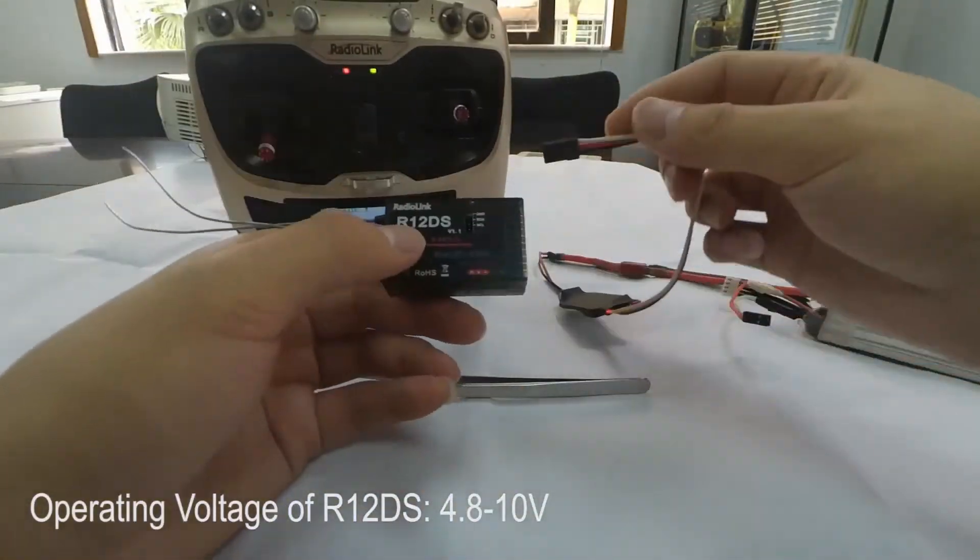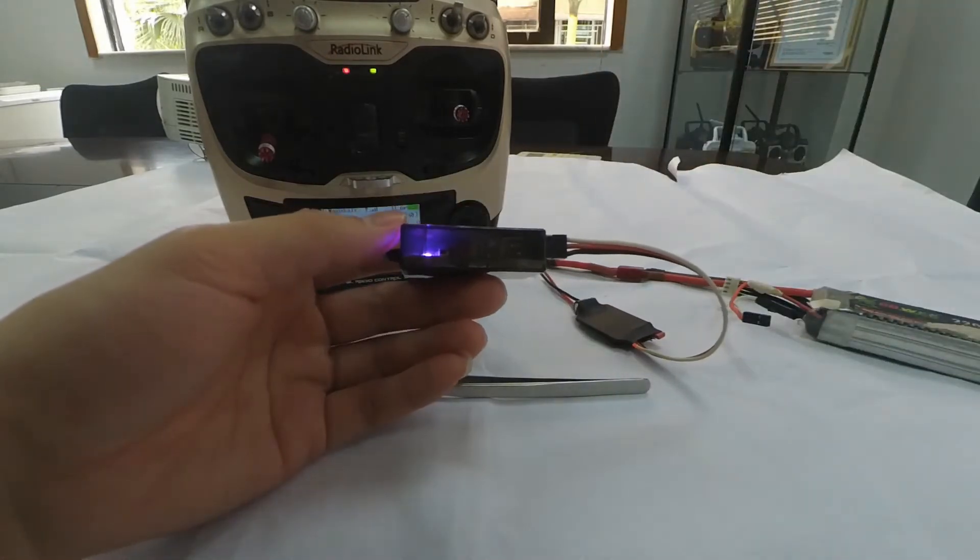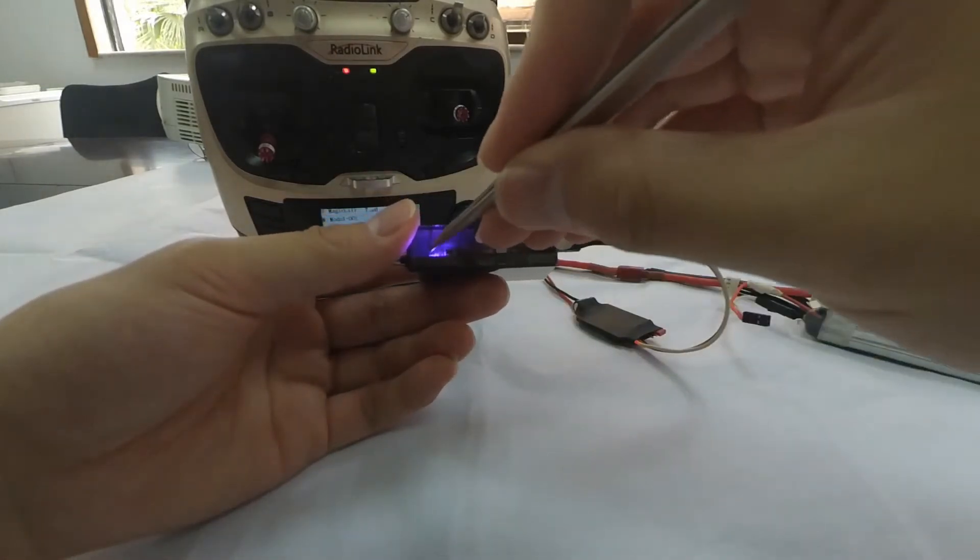Then power on the receiver. We can see that the LED indicator is always on.